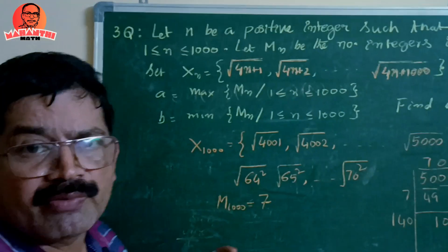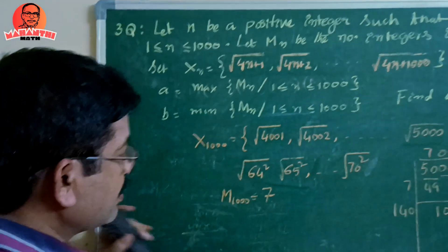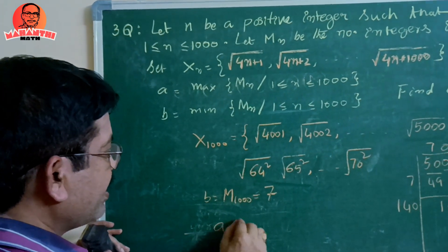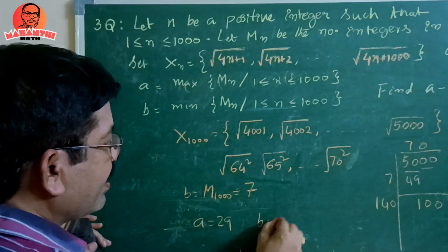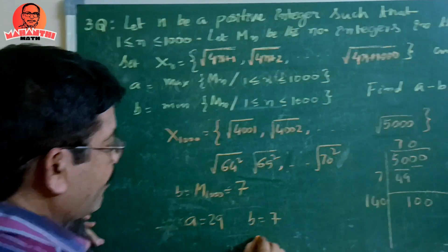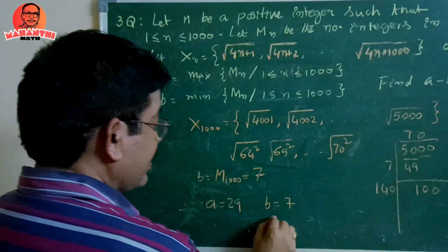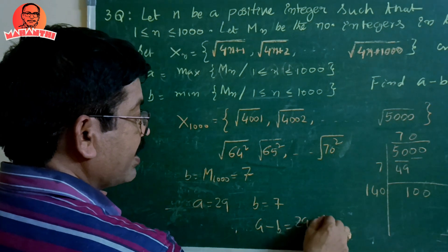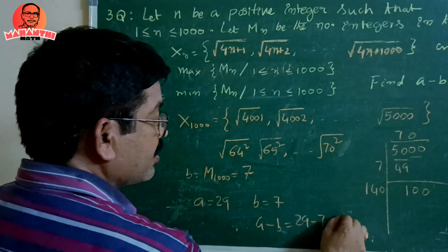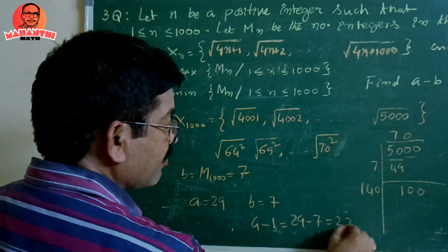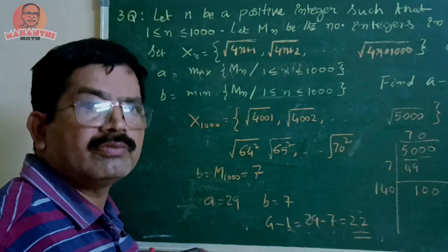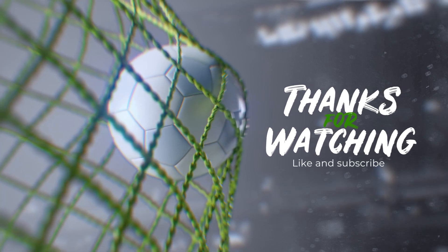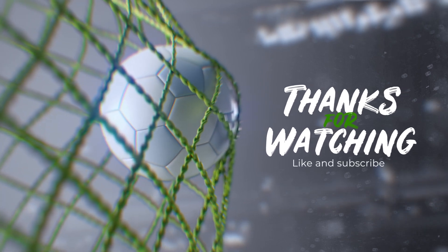So B = 7 is the minimum and A = 29 is the maximum. Therefore A minus B = 29 − 7 = 22. Our answer is 22.